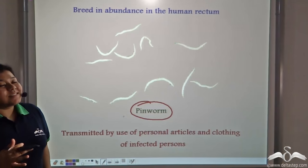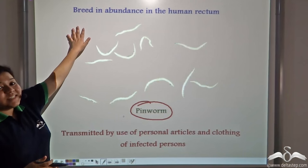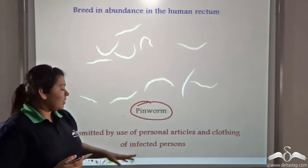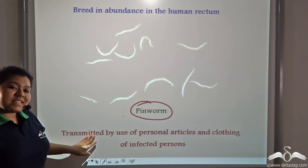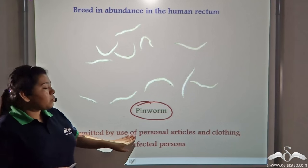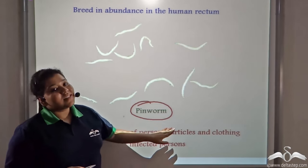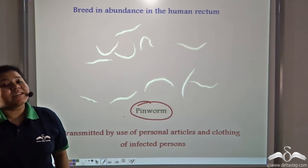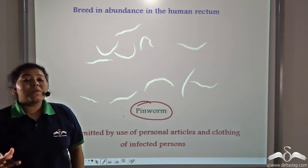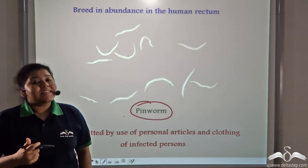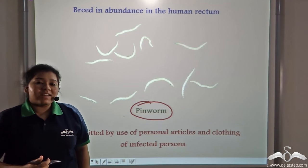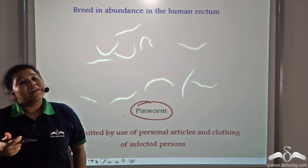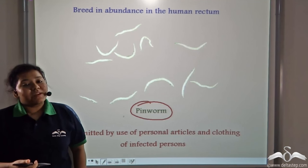These worms have a pin-like appearance and are therefore named pinworms. Since pinworms breed in abundance in the human rectum, they are easily transmitted through the use of personal articles and clothing of infected persons. To avoid these diseases, personal care and hygiene is of great importance.